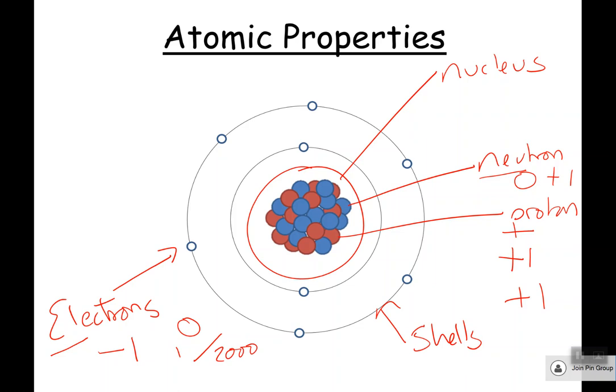Another thing to note is about the nucleus itself. The nucleus does actually have a charge because it's made of neutrons and protons. You just need to know that a nucleus is positive. The reason it's positive is because it's made of protons, which are positive, and neutrons, which are neutral — so overall it will be positive.